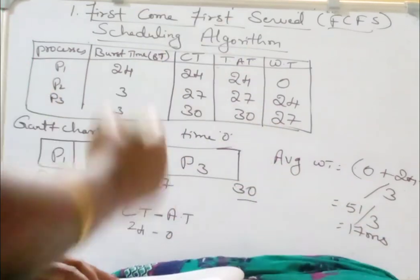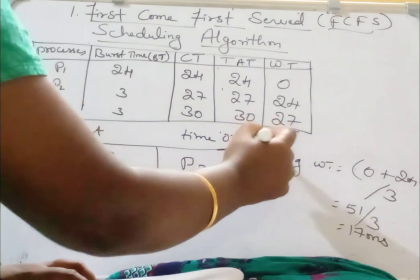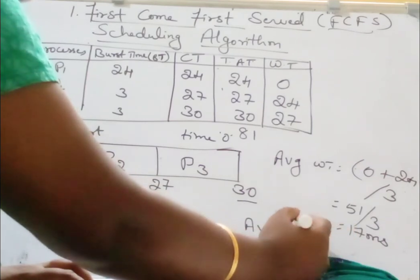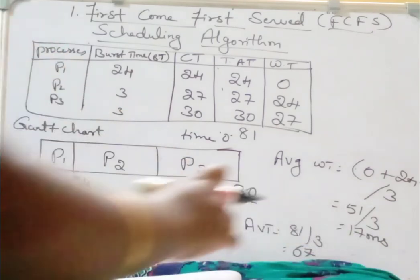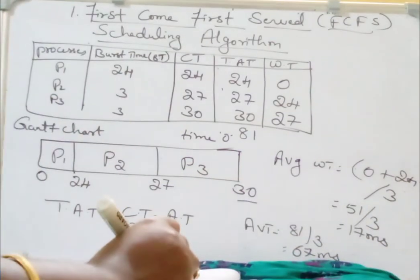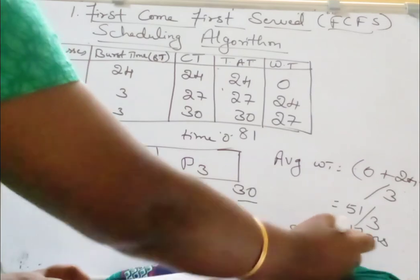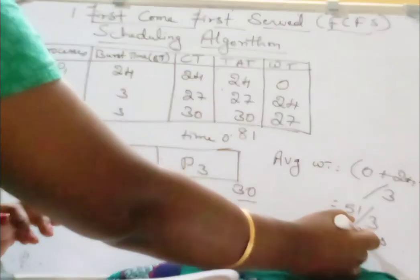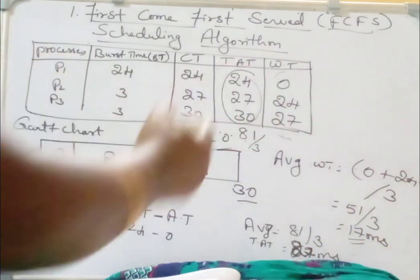We also calculate the average turnaround time. Adding all turnaround times: 24 plus 27 plus 30 equals 81, divided by 3 equals 27 milliseconds. So the average turnaround time is 27 milliseconds and the average waiting time is 17 milliseconds — that is, the total time divided by the number of processes (3).